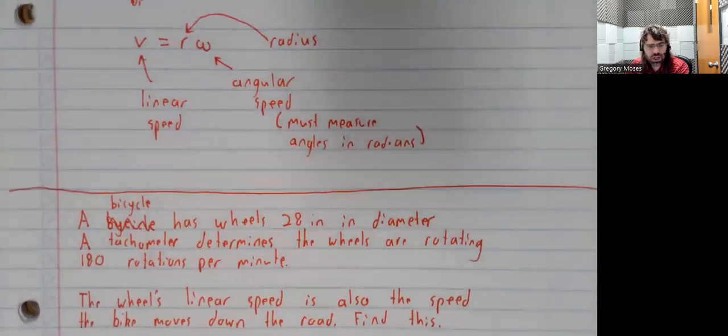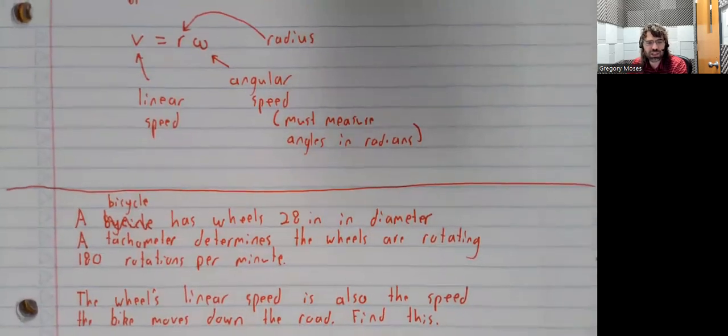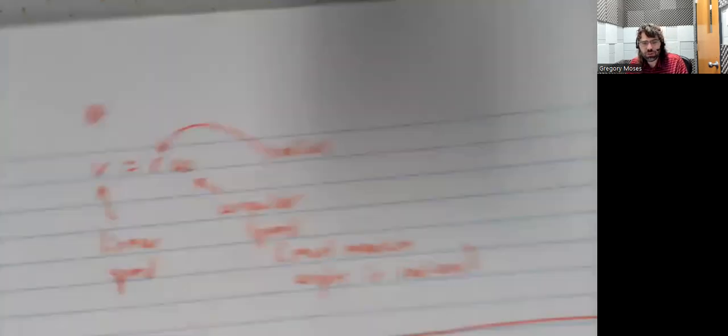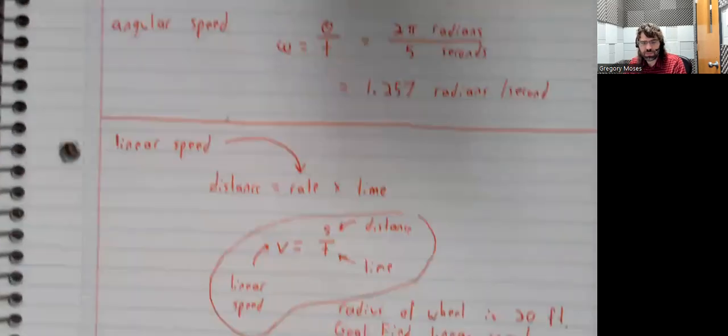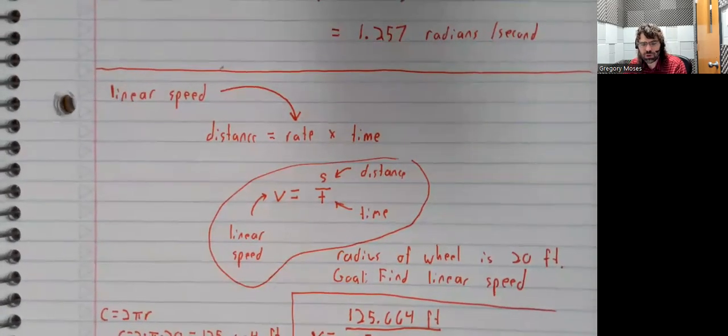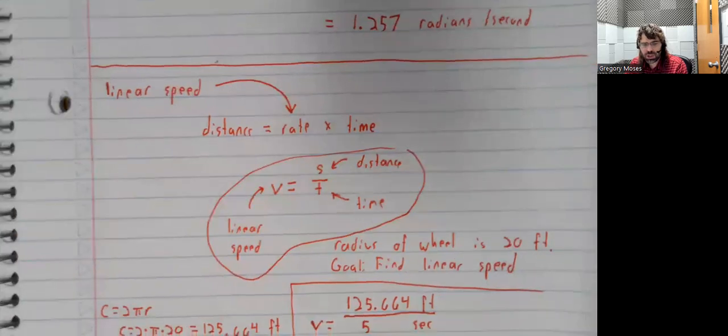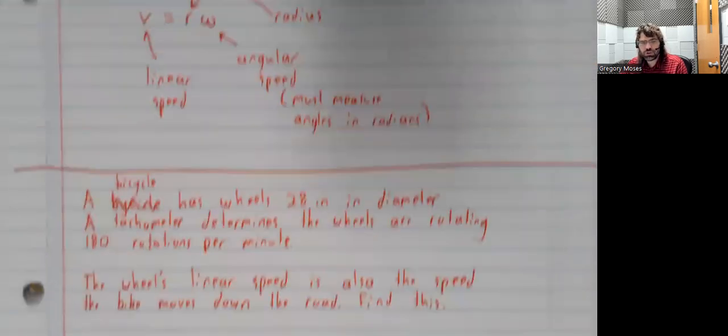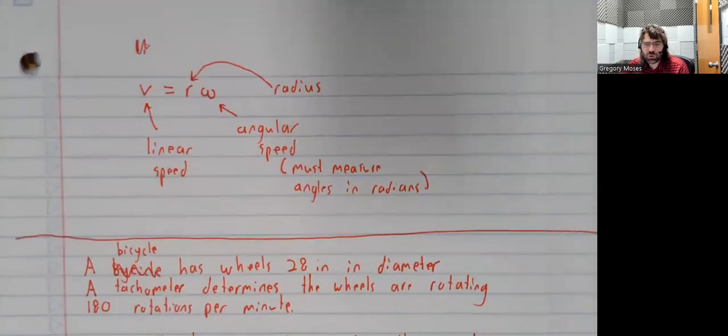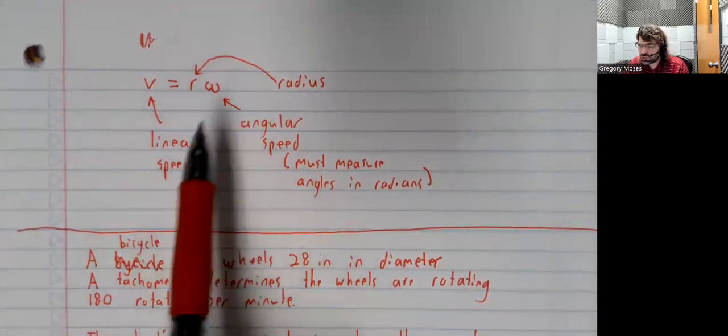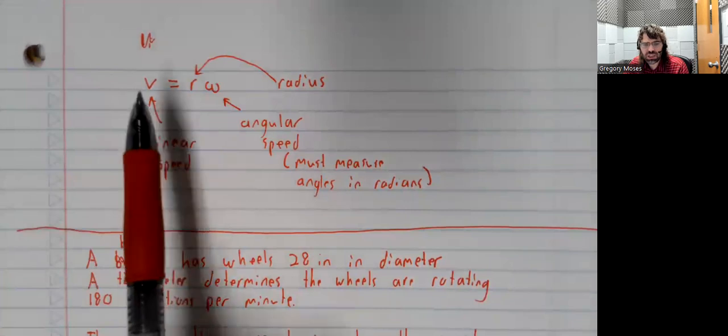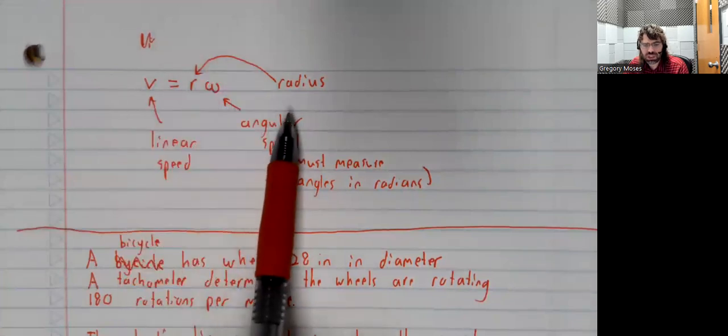So we've got several formulas for linear speed. We have this formula, and then we have this formula, but presumably this is the formula we need. Because this formula is relating linear speed to angular speed.